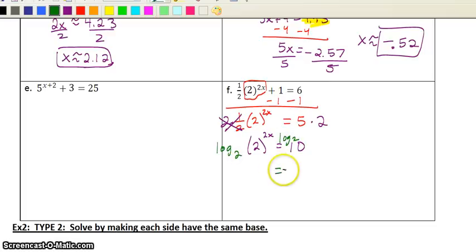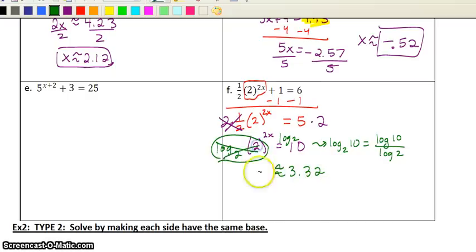So I'm going to log base 2 of both sides. Remember, in your calculator, if I'm trying to figure out what log base 2 of 10 is, I'm typing in log of the top divided by log of the bottom. When I type that in, I get 3.32. On the left side, the log base 2 and the 2 cancel each other. I'm left with 2x. Divide by 2, and I get x is approximately 1.66.